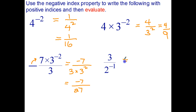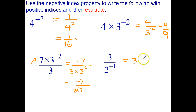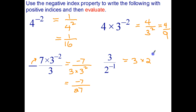And the last one: 3 stays on top. The reciprocal of 1 over 2 to the negative 1 is 2 to the negative 1, but because we're moving it to the numerator, we change the power to a positive — 2 to the positive 1. And that just gives us 6.